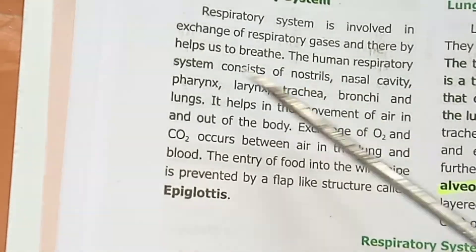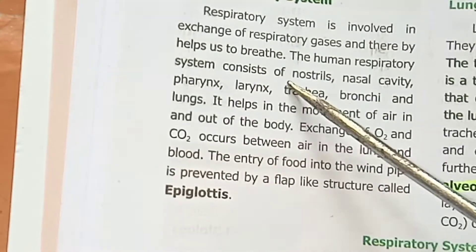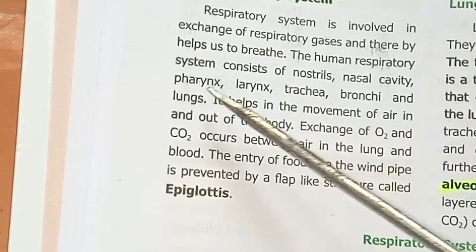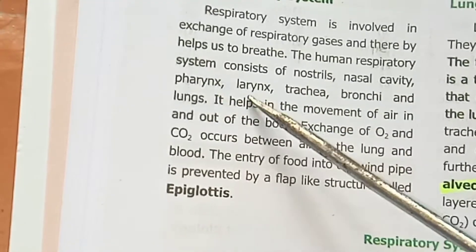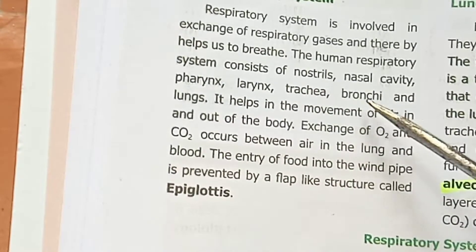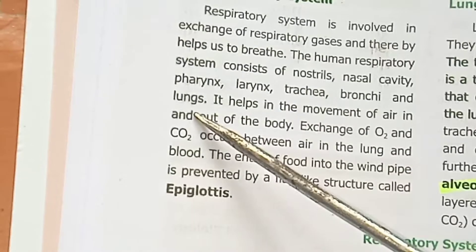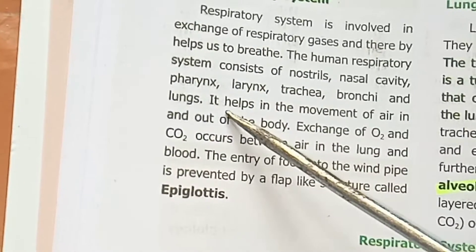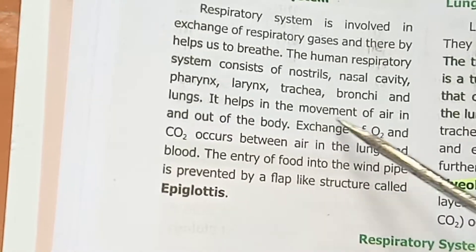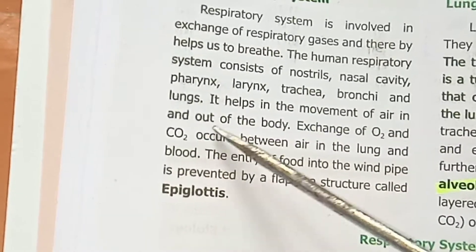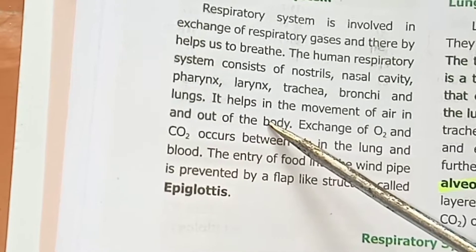The respiratory system consists of nostrils, nasal cavity, pharynx, larynx, trachea, bronchi, and lungs. It helps in the movement of air in and out of the body.